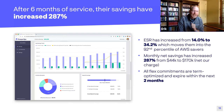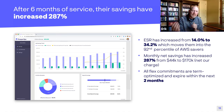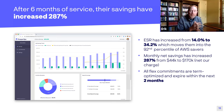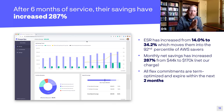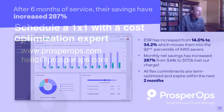Our algorithms seek to achieve a 95% coverage rate with a 99% utilization rate, ultimately maximizing what we call your effective discount — all the discounts achieved from the various types of instruments deployed. Fast-forwarding six months, after the customer subscribed to our service, their savings increased 287%.